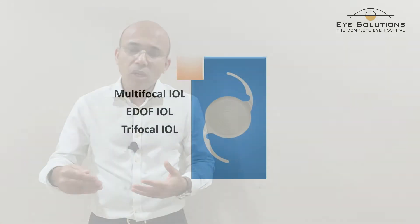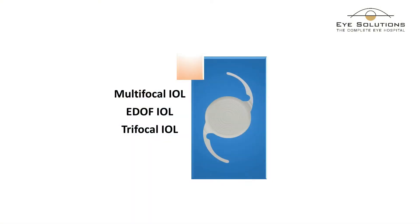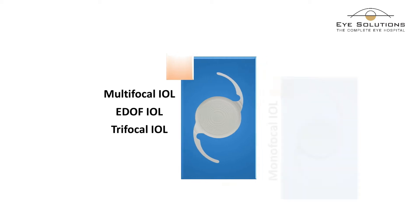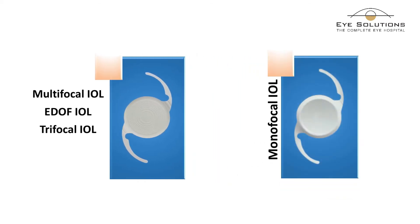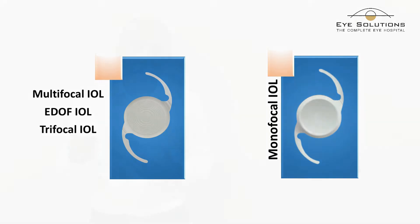The multifocal, EDOF, and trifocal lenses all have concentric rings on them. Compared to a monofocal lens — which has a plain surface — the multifocal lenses have these rings on them.